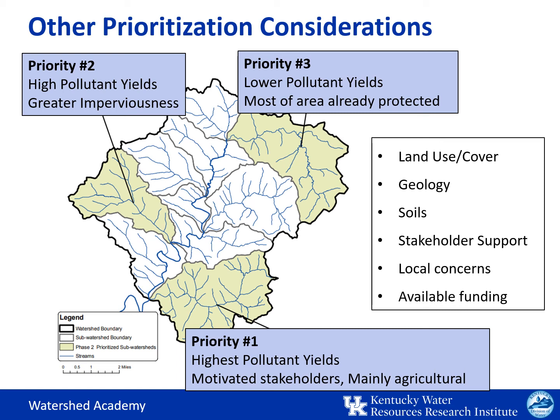Soil characteristics affect your decisions by letting you know if the soil type is more easily erodible and likely to contribute to loading. They can determine how fast or slow infiltration of stormwater occurs, and if the soils are already high in certain nutrients, such as bluegrass soils that tend to be higher in phosphorus. Available stakeholder support is critical — if there's local interest in protecting or restoring water quality, that can really boost your efforts, and you might want to align your watershed planning goals with those of the local community.